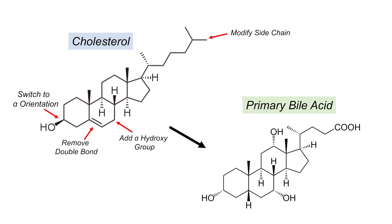The side chain can be modified and it can also be conjugated to amino acids as well. Those are the four things that occur on the cholesterol chemical structure to form a primary bile acid.